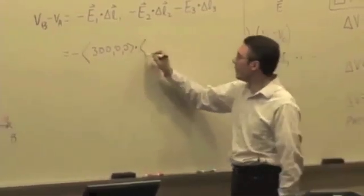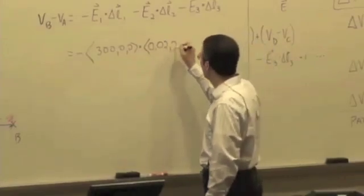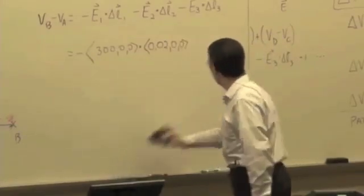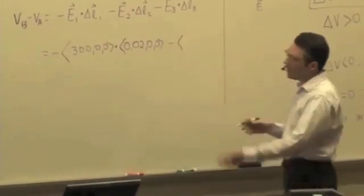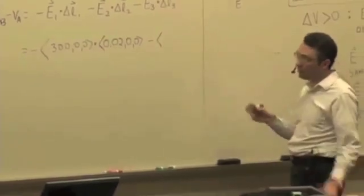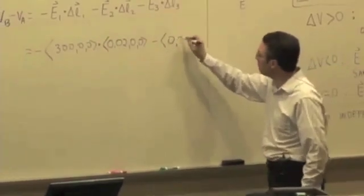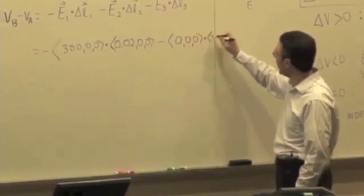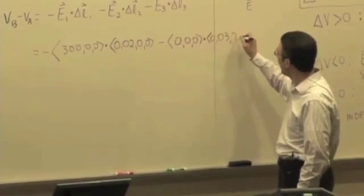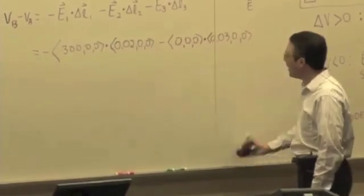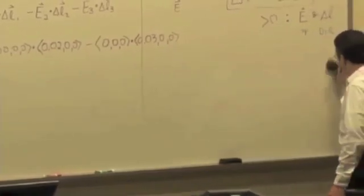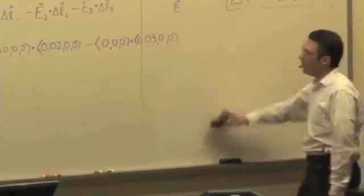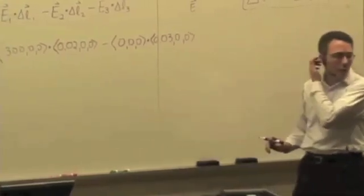0.02 x-hat. How would I write delta L1 as a vector? So electric field E2 is just 0 x-hat, dotted with that path. It's not going to matter much. And then lastly, the electric field in region three is what vector?